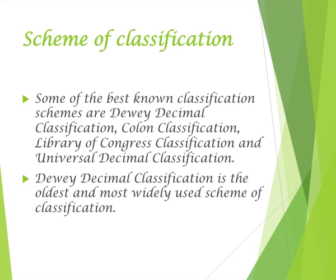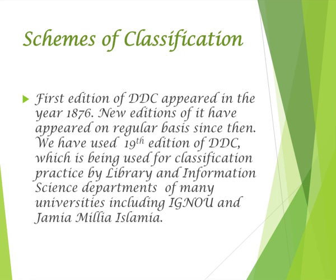Librarians need to follow some recognized system or scheme of classification to classify their collection. Some of the best known classification systems are Dewey Decimal Classification, Colon Classification of Ranganathan, Library of Congress Classification, and Universal Decimal Classification. Out of these, Dewey Decimal Classification is the oldest and the most widely used. The first edition of DDC appeared in 1876, and new editions have appeared on a regular basis since then. We have used the 19th edition of DDC, which is used for classification practice by library and information science departments of many universities including IGNOU and Jamia Millia Islamia.